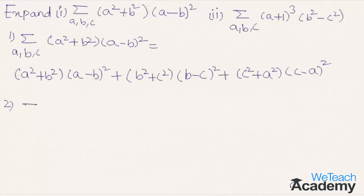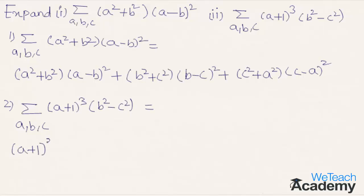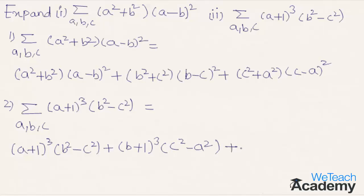Now let us expand the second example: sigma(a, b, c) of (a + 1)³(b² - c²). Expanding this, we get (a + 1)³(b² - c²) plus (b + 1)³(c² - a²) plus (c + 1)³(a² - b²).